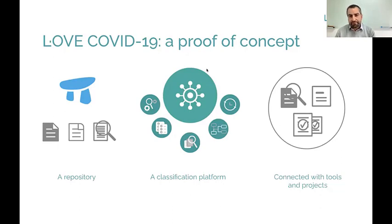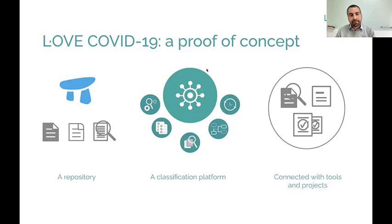The Living Overview of Evidence platform is a combination of different things. We conceptualize the LAF, the Living Overview of Evidence, with three components: first, our repository; second, a classification platform, which is the main component related with today's talk; and third, this system is connected with different projects and external software through APIs or other means.